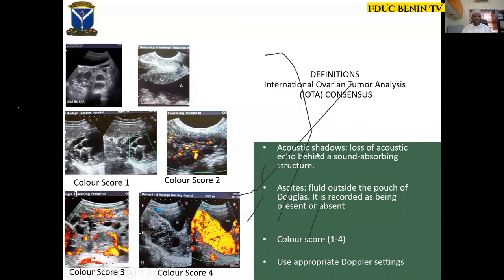Acoustic shadowing is defined by IOTA as loss of acoustic echo behind a sound-absorbing structure. In dermoid cysts, you can see an echogenic area with a dark area behind it — this is acoustic shadowing, also called the tip of the iceberg sign in dermoid cysts. Ascites is fluid outside the pouch of Douglas and is recorded as either present or absent. This is ascites in a patient with advanced ovarian cancer, where the uterus is literally flooded — with deposits in the sigmoid, on the front of the uterus, and in the rectovesical pouch.